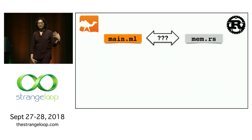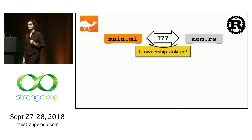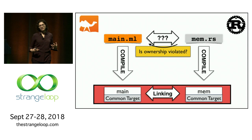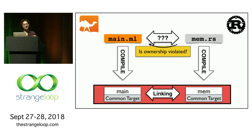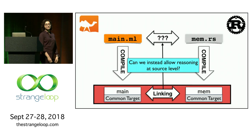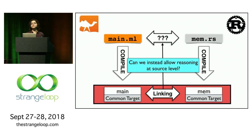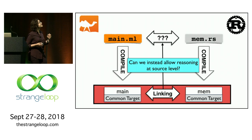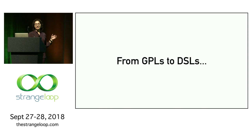Let's zoom out. When you have OCaml and Rust, how does a programmer figure out if ownership is violated? They really don't have much recourse other than to compile the code, link it together, run it, see what errors crop up, and then debug. The bigger question throughout this talk is: can we not force programmers to do that? Can we instead bring this reasoning — about whether we can safely put together components and whether the other language will violate our guarantees — back to source level?